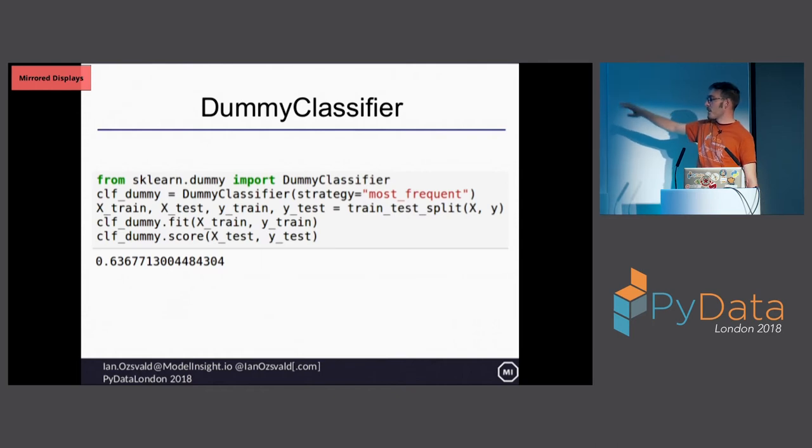I take the dummy classifier. It works just like any of the other classifiers. I make a train test split, fit it. Fitting it takes X train but it doesn't use X. It's only going to look at the distribution of the target column Y train. Then you score it. This is telling me on that train set, the most frequent answer is that most people died. If it predicts that you died, then it gets it right 63% of the time in this case.